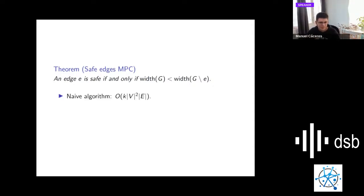With this simple theorem, we have a naive algorithm for every path in the path cover. This is order k times V edges. We can compute the minimum path cover of G minus e and obtain this width and compare. So this is the naive algorithm, but we can do better.